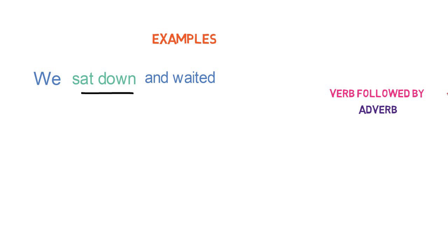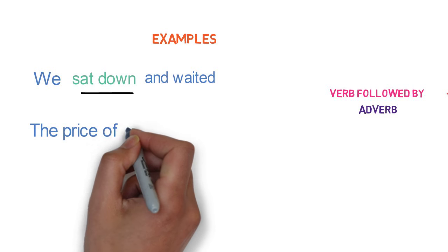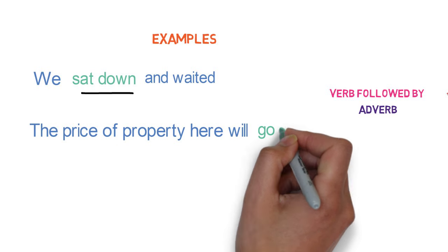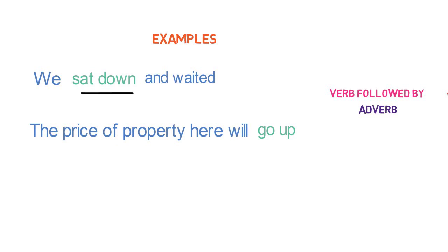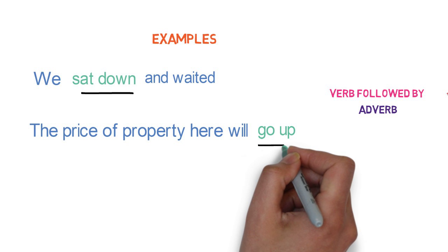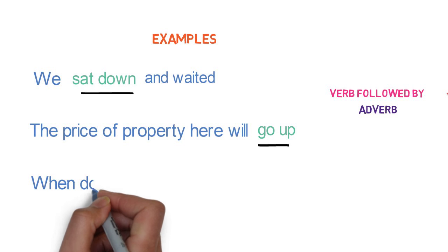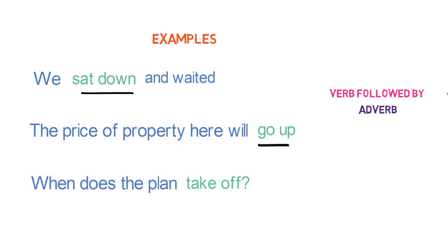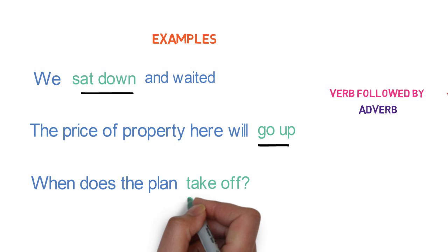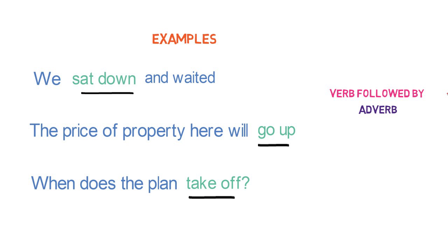Let's look into the next example. 'The price of the property here will go up.' Here, 'go' is the verb and 'up' is the adverb, and the whole group of words 'go up' is a phrasal verb. Let's look into the last example of phrasal verb containing adverb. 'When does the plane take off?' Here, 'take' is the verb and 'off' is the adverb. The whole phrase 'take off' is a phrasal verb containing adverb. All these are examples of phrasal verbs having adverbs.